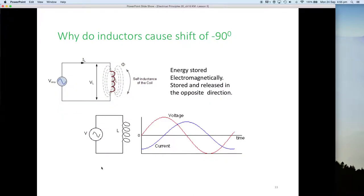So what's the problem? Why do inductors cause this phase shift of minus 90 degrees? Well, it all comes down to energy stored electromagnetically, which is very different to how a capacitor stores energy.